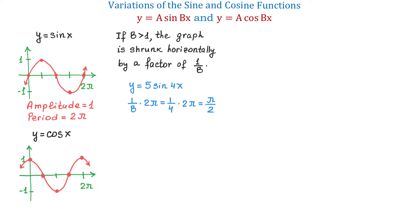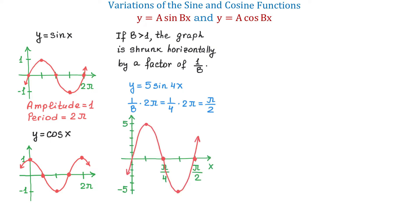Now let's see the graph. Here we have the graph, and because the amplitude is 5, the maximum value of the function is 5 and the minimum is negative 5. The function completes one full cycle from 0 to pi over 2. Now I would like to explain more why we have to multiply 1 over b by 2 pi to find the new period.